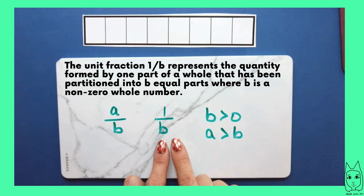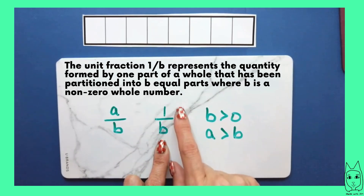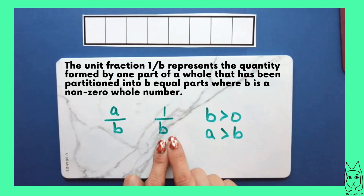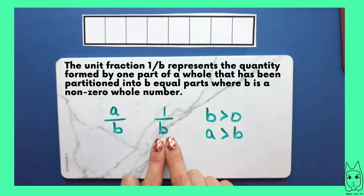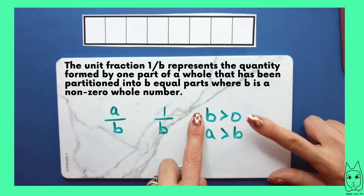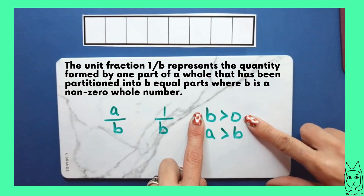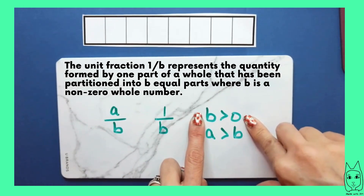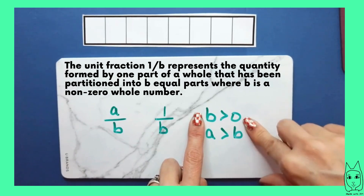The unit fraction is saying that you're going to have one of those parts out of whatever the denominator is going to be. And b, the denominator, has to be greater than zero — there's no way we could build a fraction without it being greater than zero.